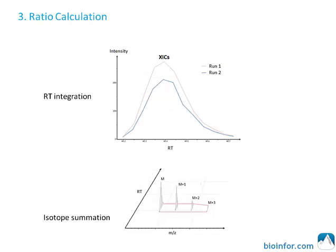The next step is ratio calculation. The relative abundance ratio is calculated by the area of the extracted ion chromatogram in two runs. In each scan, intensities of isotopic peaks are summed when the XIC is generated. Here are two XICs of a peptide feature — the one in red is from run 1 and the blue one is from run 2. The abundance ratio can be estimated by the ratio of the areas of the two XICs.